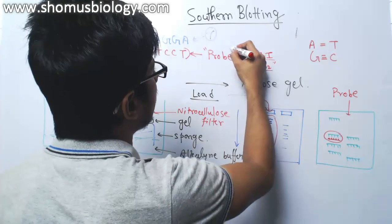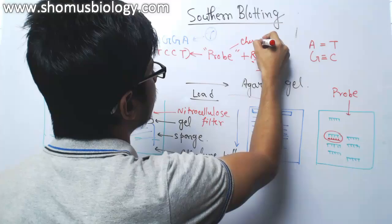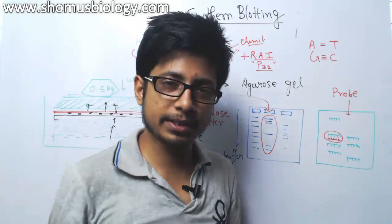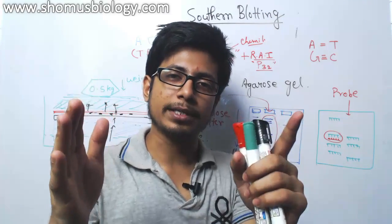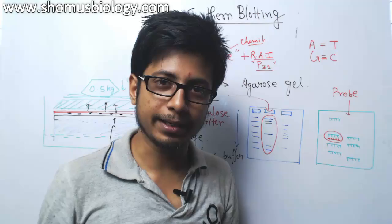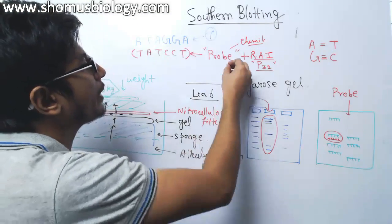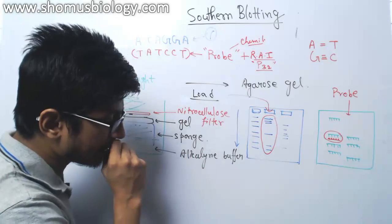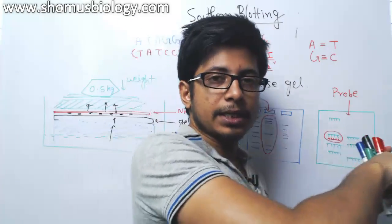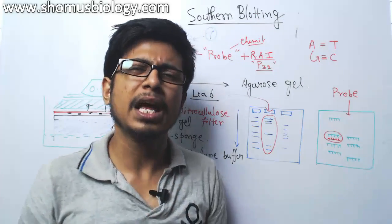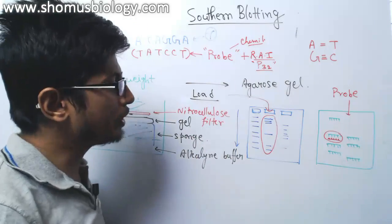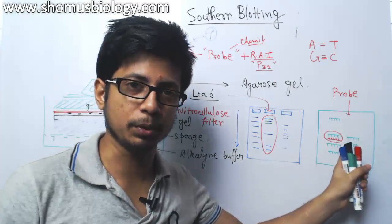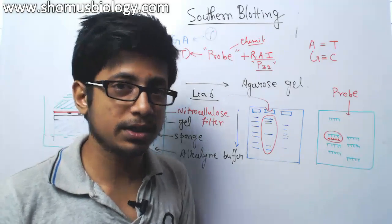Another option is that the probe can be hybridized with a chemiluminescence molecule — a chemical that when you put a substrate, it reacts with the substrate and provides light that we can visualize. That will also tell the position of the target DNA. Or the probe can be attached with colorimetric enzymes — enzymes that convert a substrate into a colored product we can visualize. But mostly in DNA hybridization assays we use radio-labeled probes or chemiluminescence; radio-labeled probes are most common because they are easy to use, easy to prepare, and cost-effective.